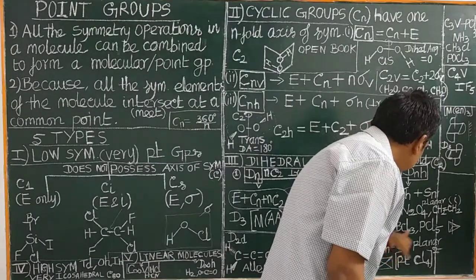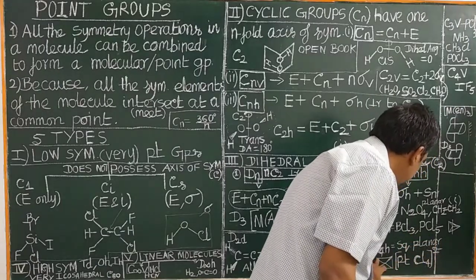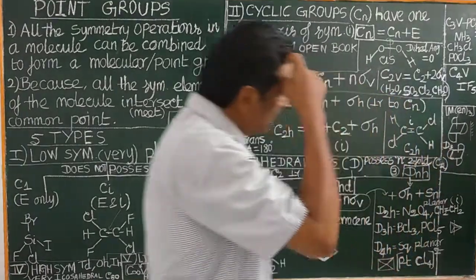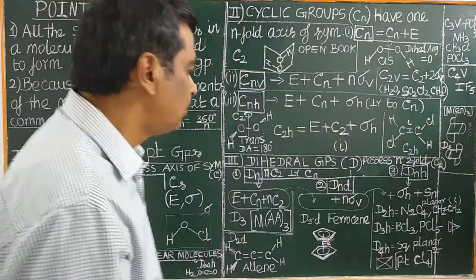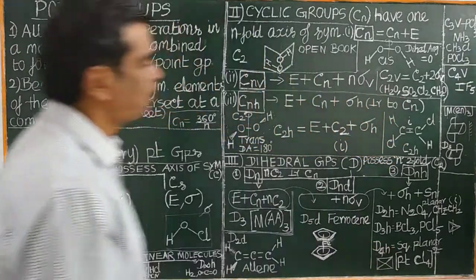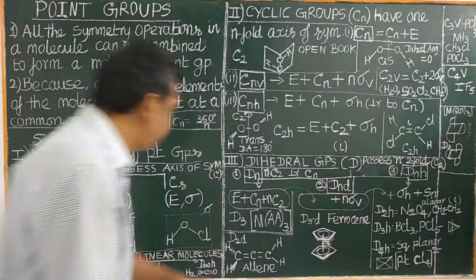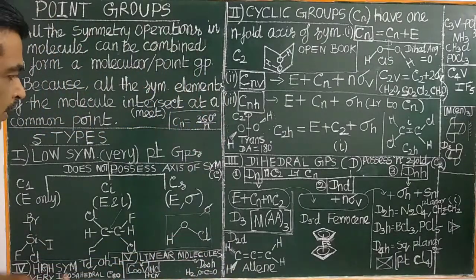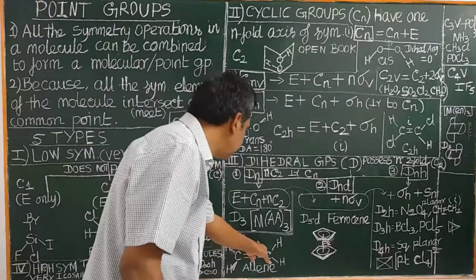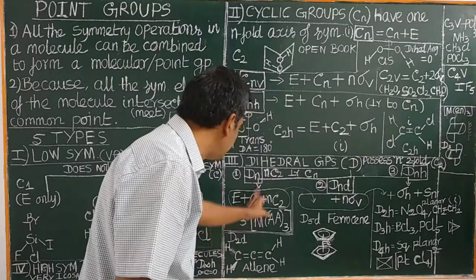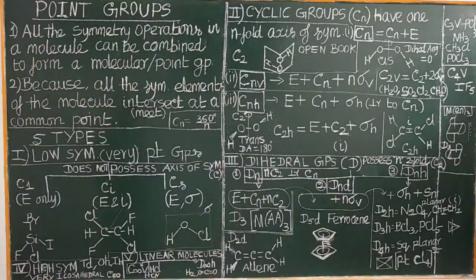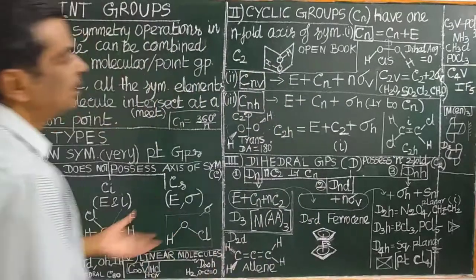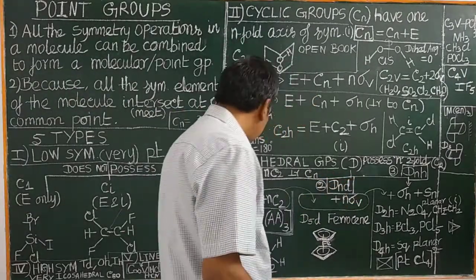For example, D2D — allene is an example of D2D. So they also possess the S4 improper axis. If asked what are the symmetry operations possessed by D2D, you can write E plus the elements using this general formula for general point groups. This is the general point group, and D2D is a particular point group.